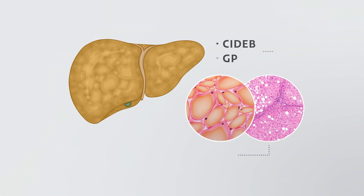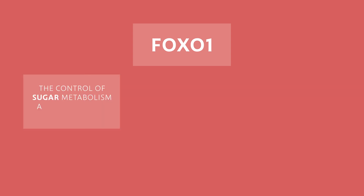These included mutations in CIDEB and GPAM, which both regulate the production and handling of fat within hepatocytes. However, the most intriguing finding was recurrent mutations in FOXO1, a major gene involved in the control of sugar metabolism and controlled by insulin.